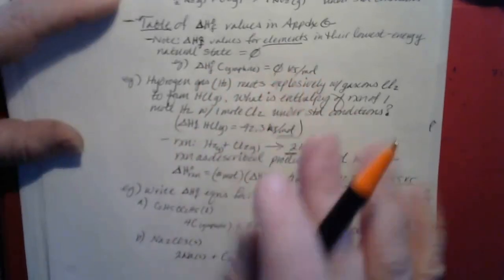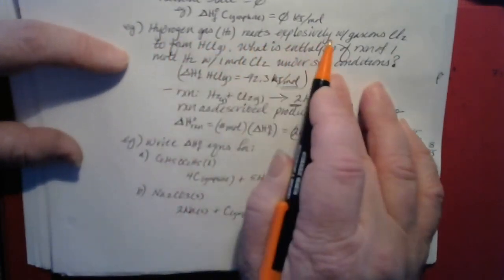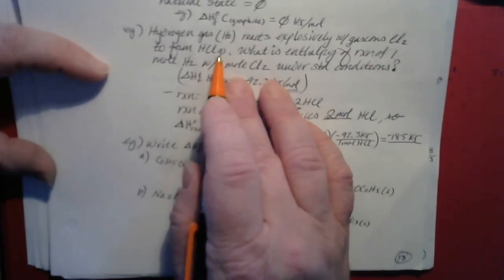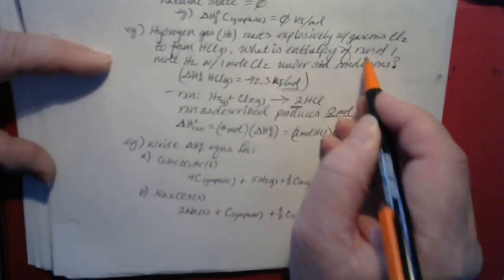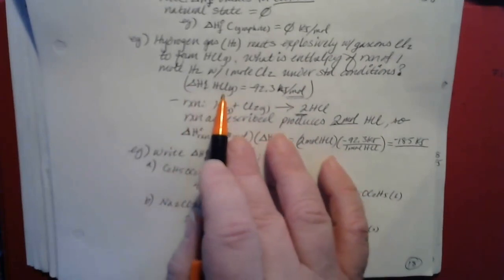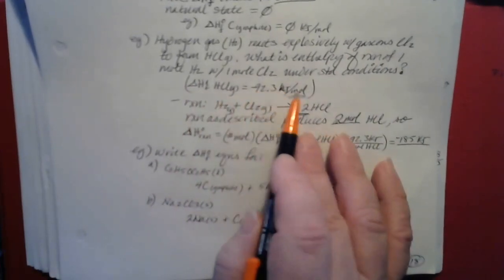The heat of formation for carbon as graphite is zero kilojoules per mole because it already exists in nature. The standard enthalpy of formation for carbon as diamond is not zero — it's small but not zero. For example: hydrogen gas reacts explosively with gaseous chlorine to form hydrogen chloride gas. What is the enthalpy of reaction of one mole of H2 with one mole of Cl2 under standard conditions? The heat of formation for hydrogen chloride gas is negative 92.3 kilojoules per mole.